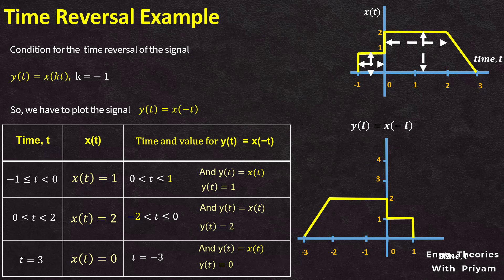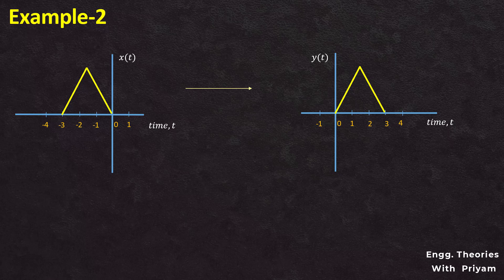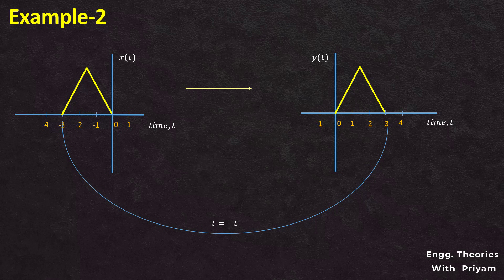Now let's take another example. This signal has values from t = -3 to t = 2. To perform this time reversal, we simply reverse the signal about the y-axis, where t = -3, -2, and -1 will become t = 3, 2, and 1. This is the time-reversed version of x(t) where t is replaced by -t, so t = -3 in x(t) is replaced by t = 3 in y(t).